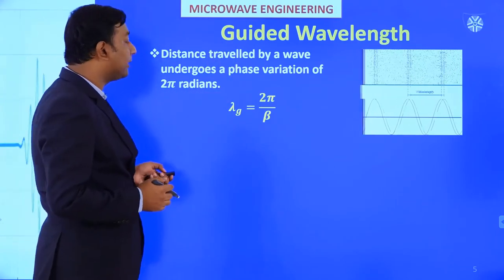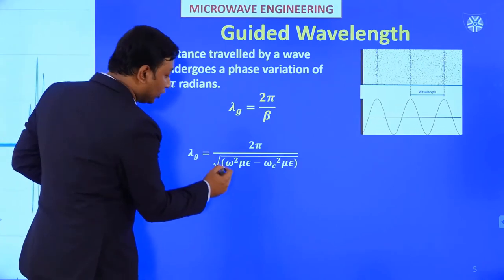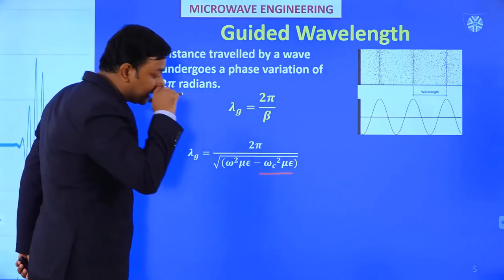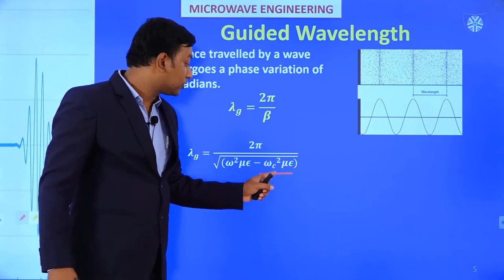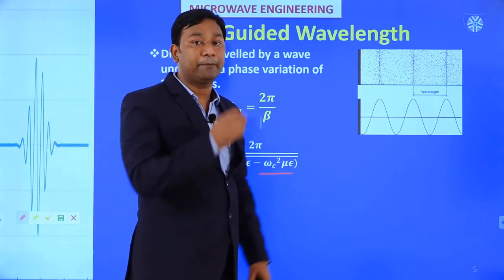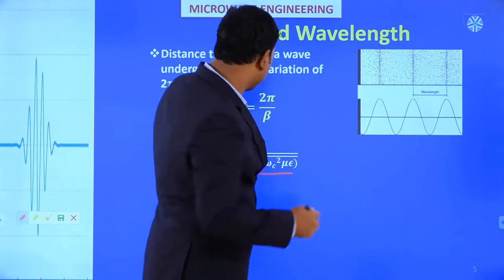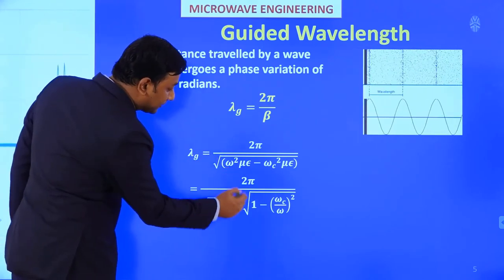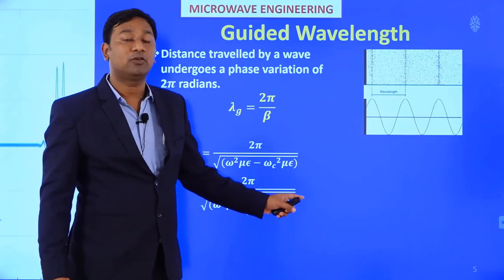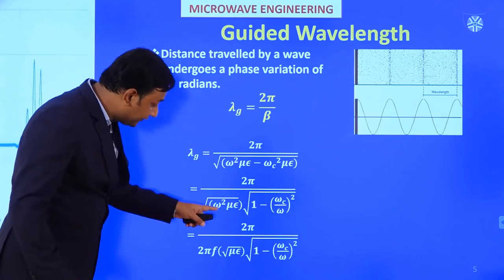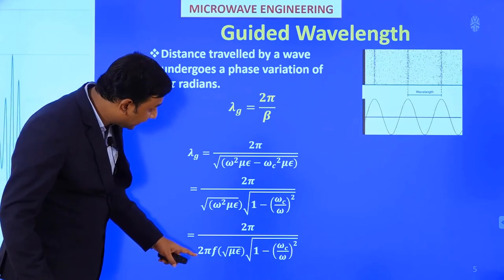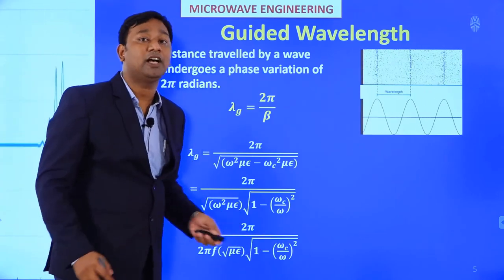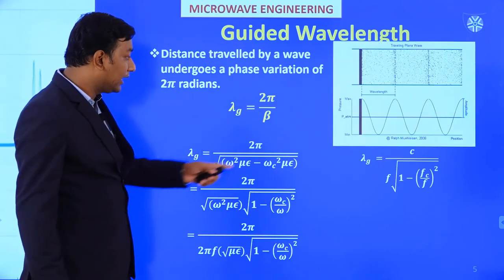From the earlier equation we know β = √(ω²με - ωc²με). We already found ωc²με = (mπ/a)² + (nπ/b)². Taking ω√με outside, β = ω√με × √(1 - (ωc/ω)²). We can write ω = 2πf and 1/√με = c.